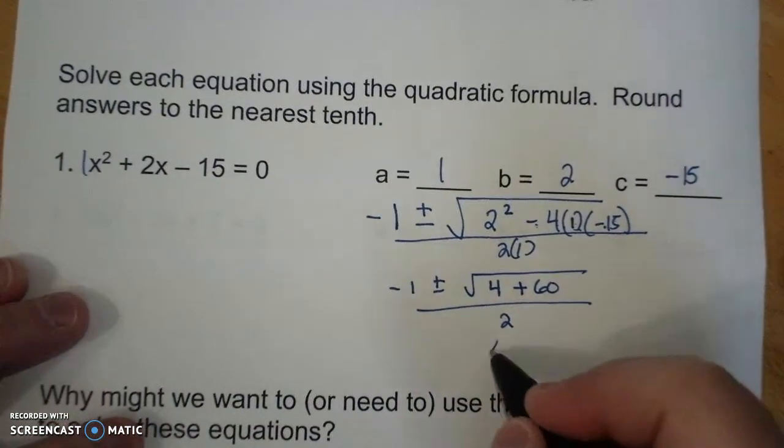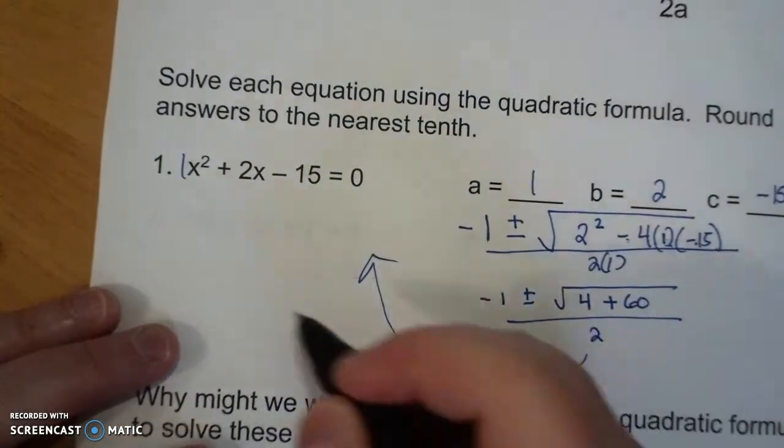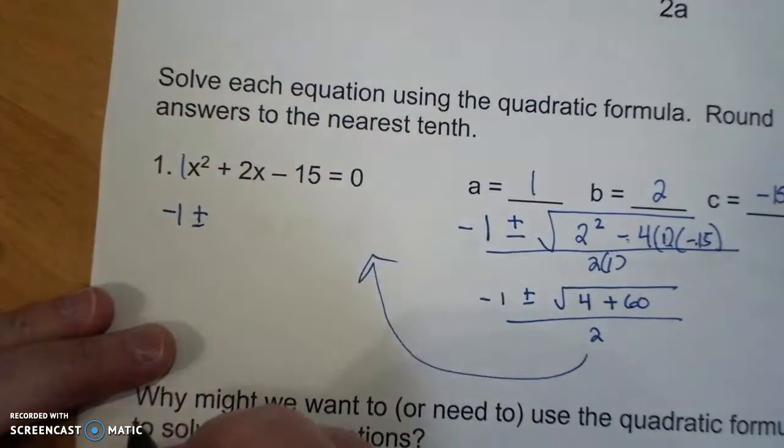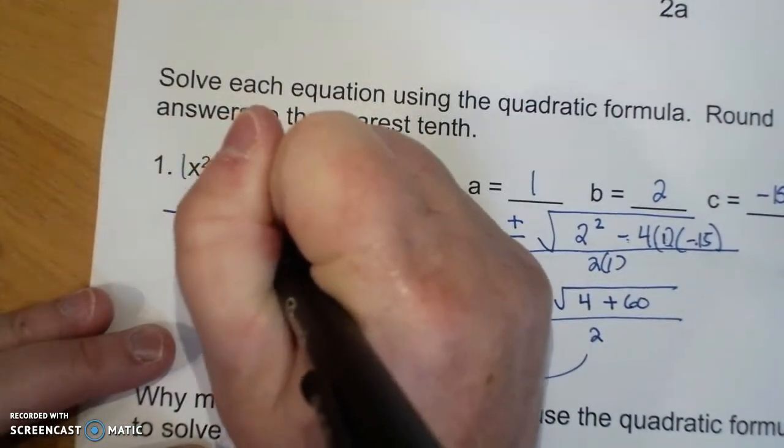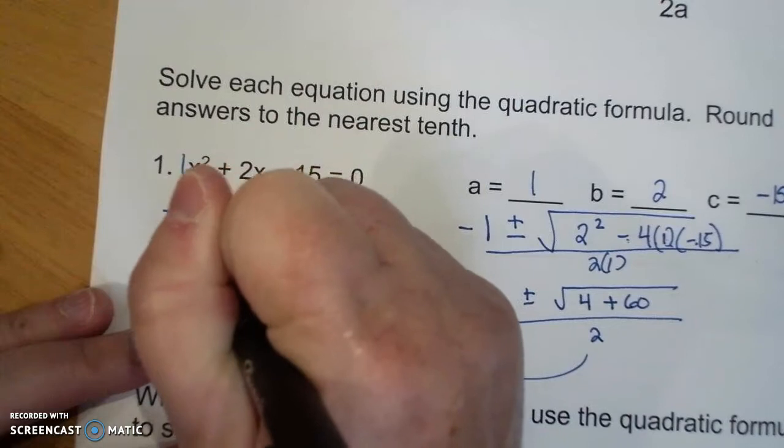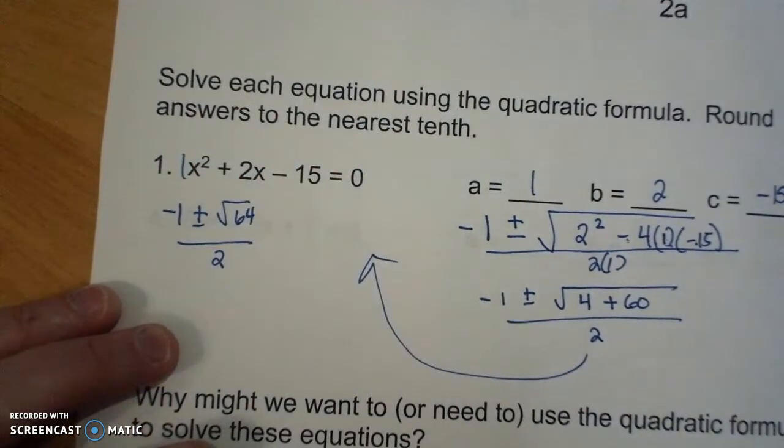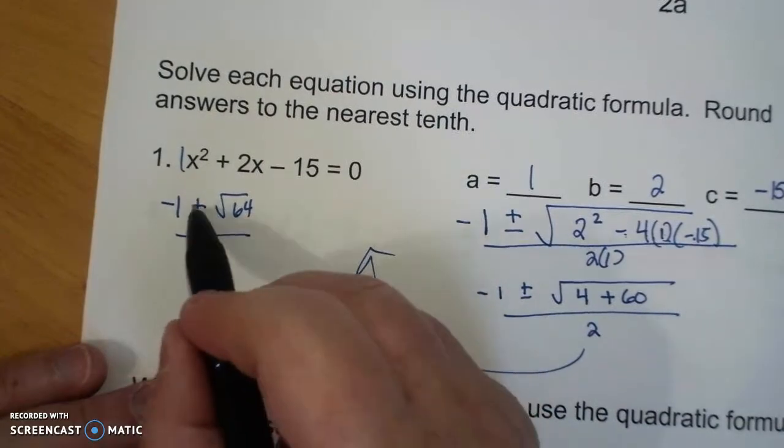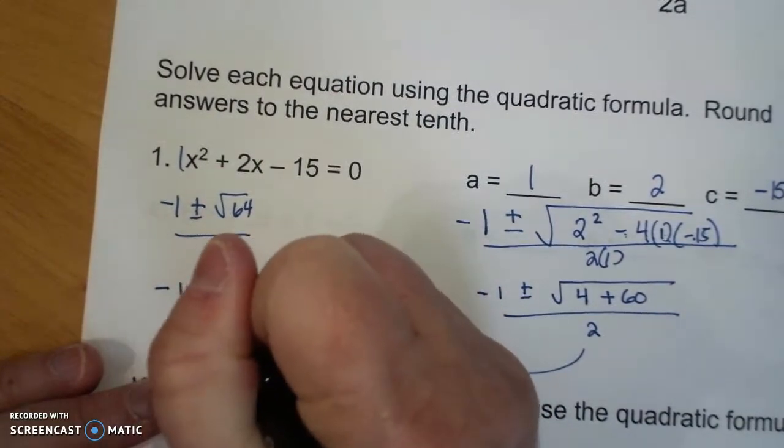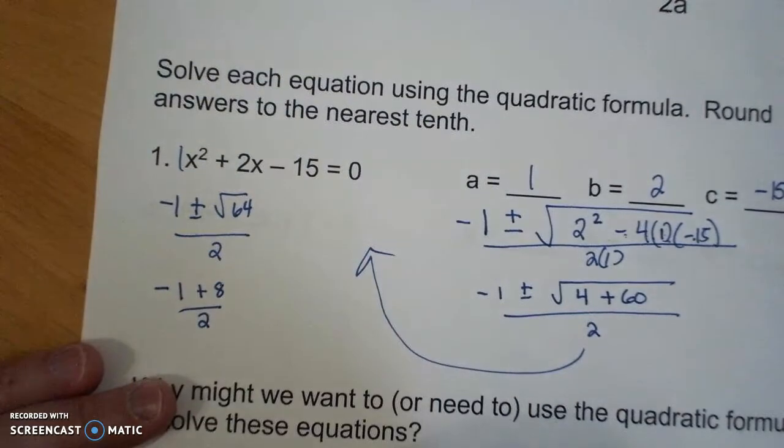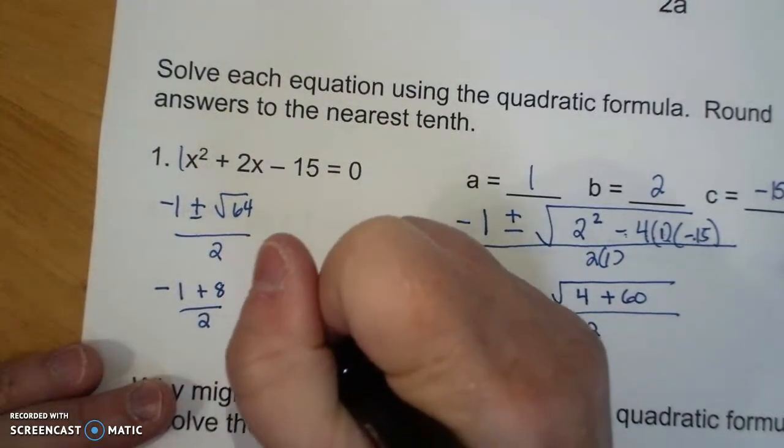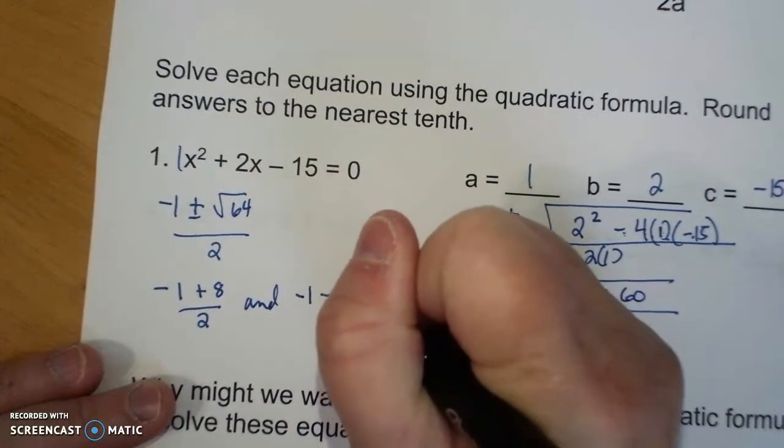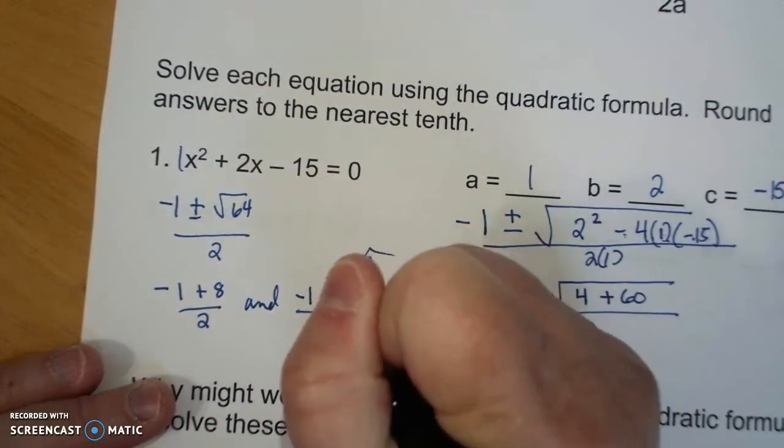So that becomes negative 1 plus or minus the square root of 64 over 2. Now this is where you split it for this plus or minus. That's negative 1 plus 8 over 2, and negative 1 minus 8 over 2.